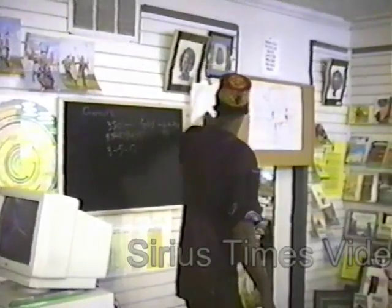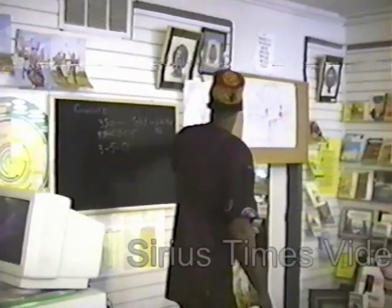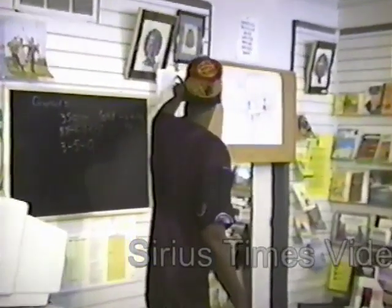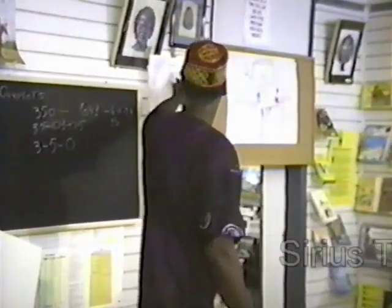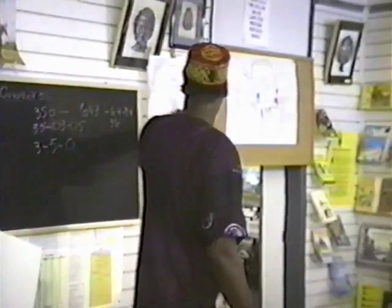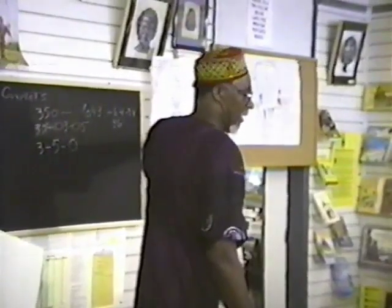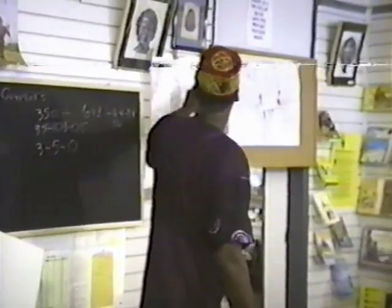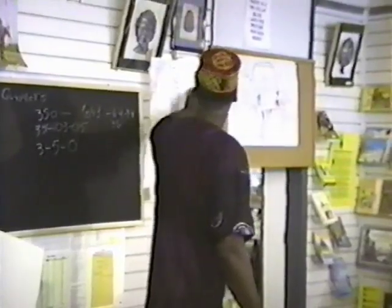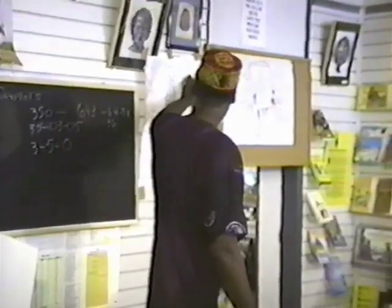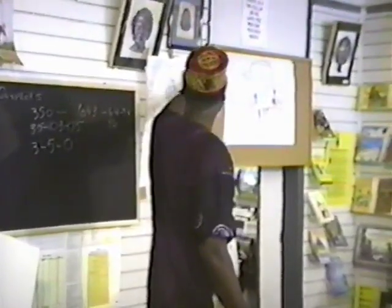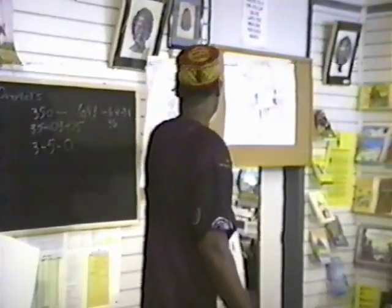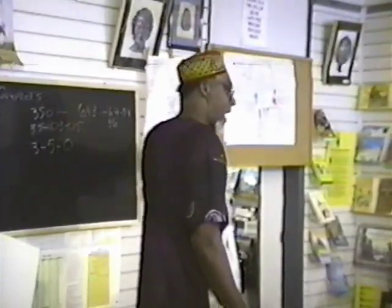Here you add one to the first column, two numbers to the second column, three numbers to the third — it brings you back to the number you start with. Here you add one number to the first column, three numbers to the second column, seven to the third column, and it brings you back to the number you start with. It's that simple.